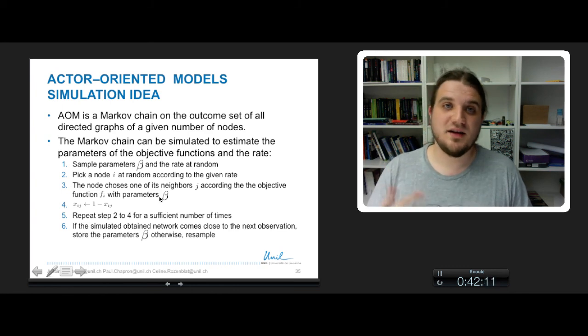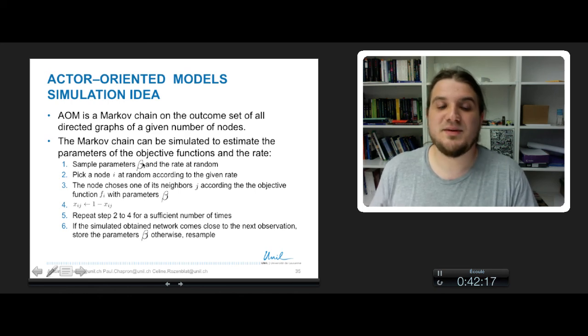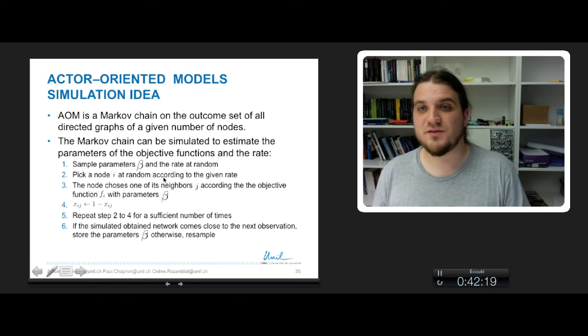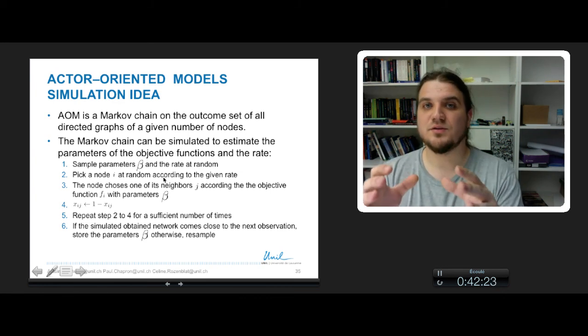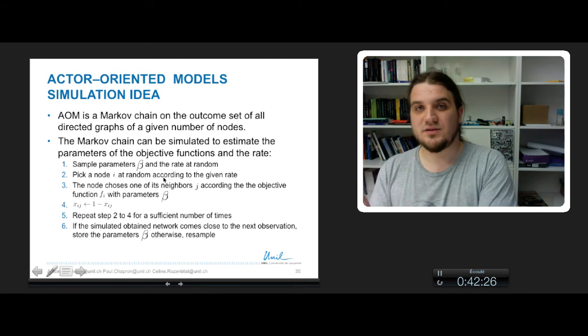until you have sufficiently iterated to have the best beta parameter, so the best objective function that describes the process that makes your network from one observation to the other.